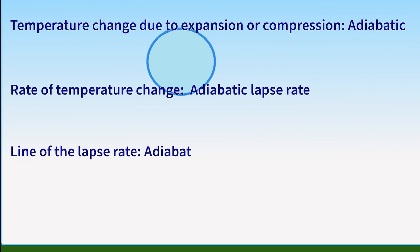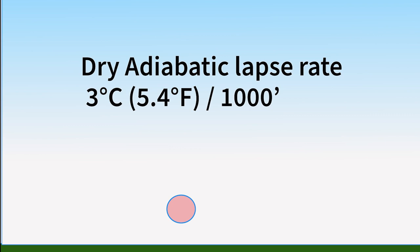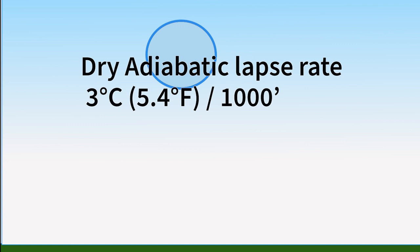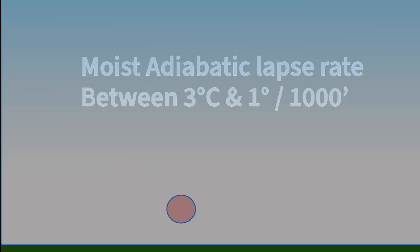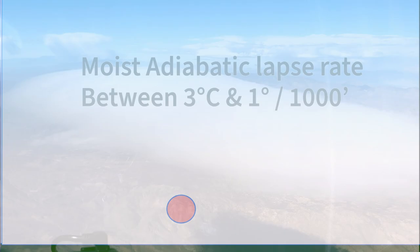This temperature change works for unsaturated air — that is, not in a cloud — in both directions at the same rate: 3 degrees Celsius, or 5.4 degrees Fahrenheit, per 1,000 feet. This is the dry adiabatic lapse rate. If we raise a parcel of air 1,000 feet, it will cool by about 3 degrees Celsius, and if we lower that same parcel by 1,000 feet, it will warm by the same 3 degrees. It can work for moist air too, as long as the droplets don't form precipitation in the meantime.